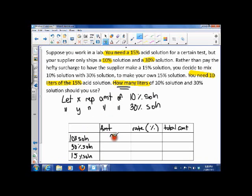So, the amount of the 10% solution, we don't know but we're letting x represent that. The amount of the 30% solution, we don't know but we're letting y represent that. And the total of the 15% solution, well, that's 10. So I need 10 liters of the 15% solution. The rate is, well, just like it's called, it's 10%. So that means it's 0.10. The rate for the 30% solution is 30%. And the rate for the 15% solution, we know is 15%.